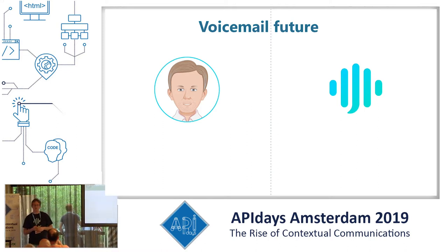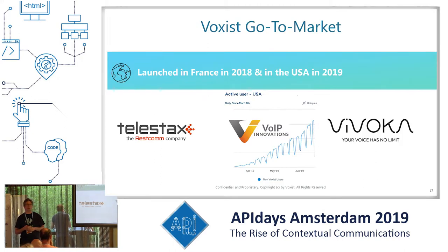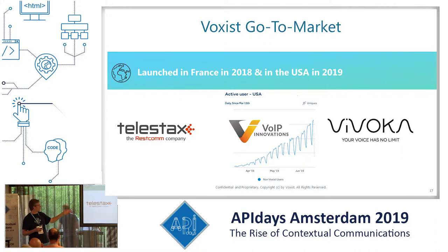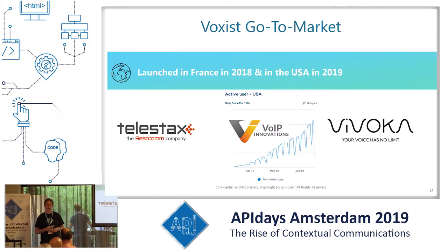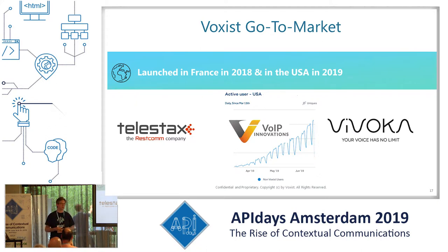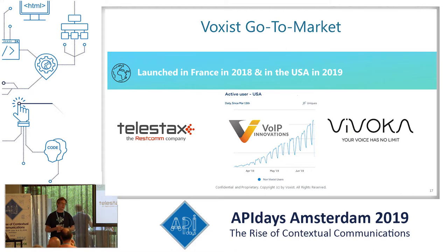We launched in France last year and just launched in the US. We're quite happy with the growth we're seeing in the US over the last few months. One thing we've done in terms of go-to-market is working with different partners that have a marketplace — you might have met Telestax, VoIP Innovation here. In France we are working with a company called Vivoka. We leverage this API ecosystem not only to build our service, because Voxys relies a lot on APIs from those providers, but also to expose our own service to their customer base through their marketplace.